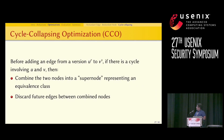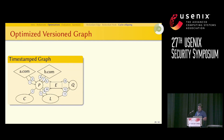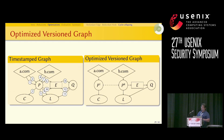We also perform cycle collapsing optimization, where if two nodes are in a cycle, we discard the events between those two nodes and consider them as a supernode. This is illustrated with the optimized version graph converted from the timestamped graph in our system.